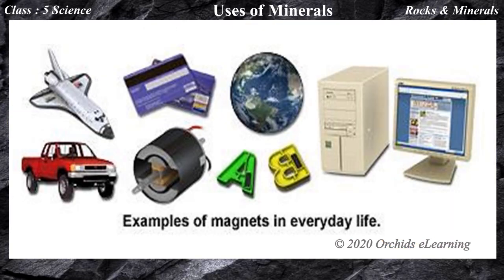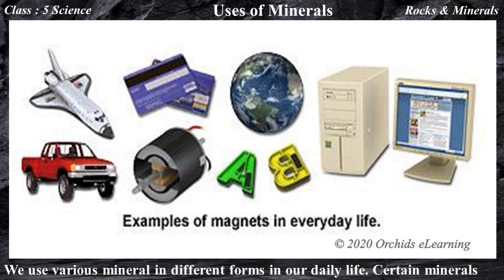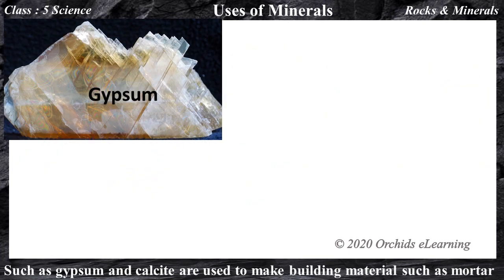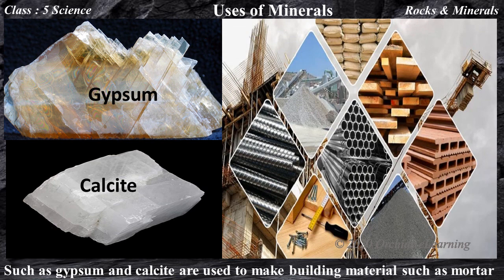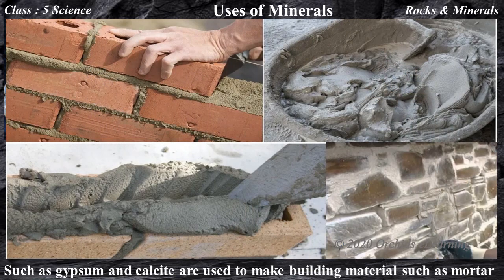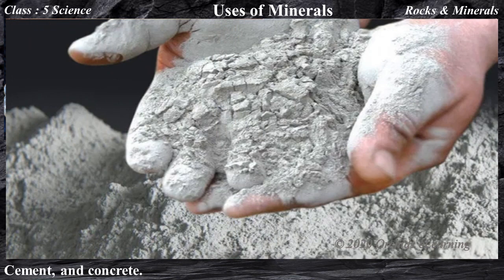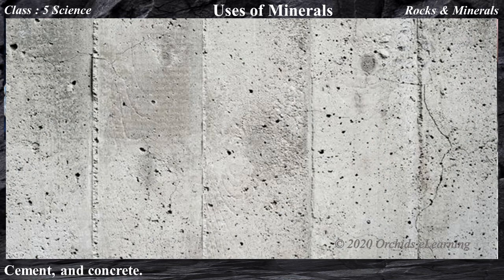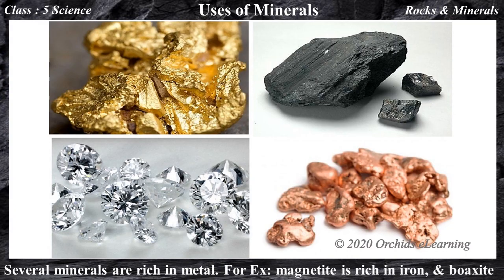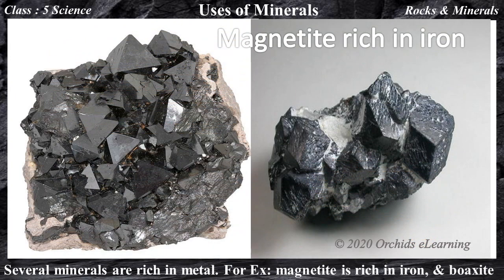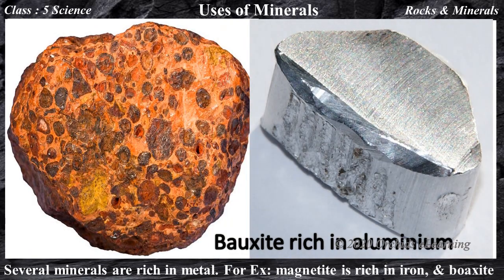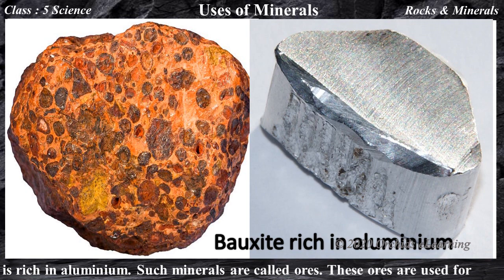We use various minerals in different forms in our daily life. Certain minerals such as gypsum and calcite are used to make building materials such as mortar, cement, and concrete. Several minerals are rich in metal — for example, magnetite is rich in iron and bauxite is rich in aluminum. Such minerals are called ores.